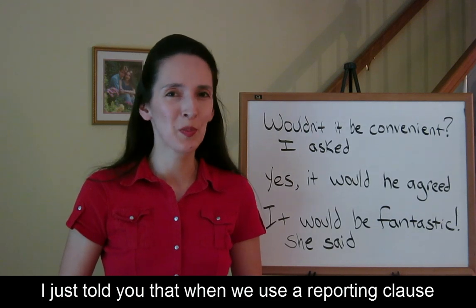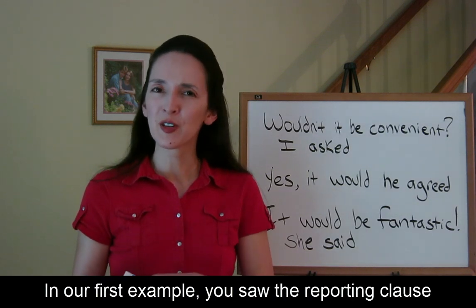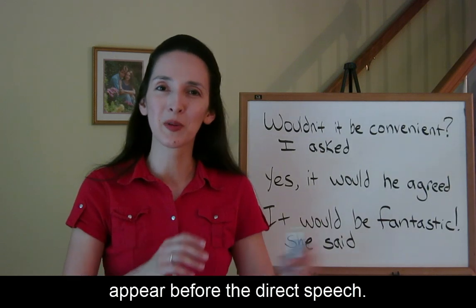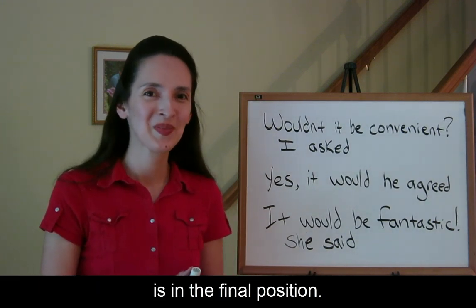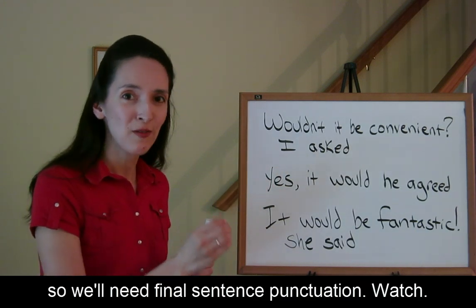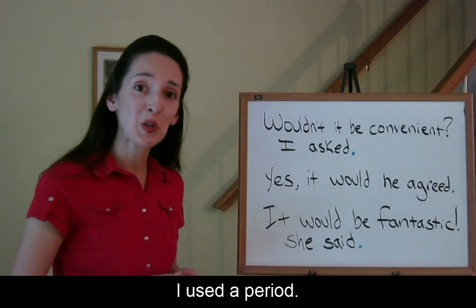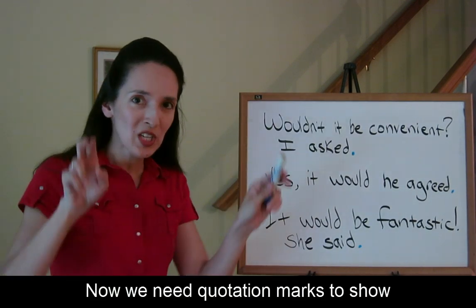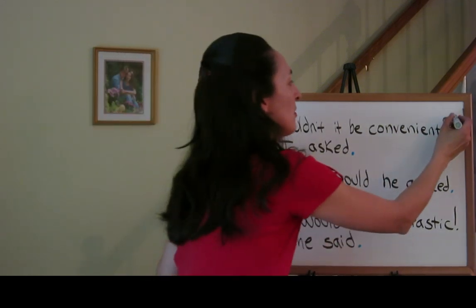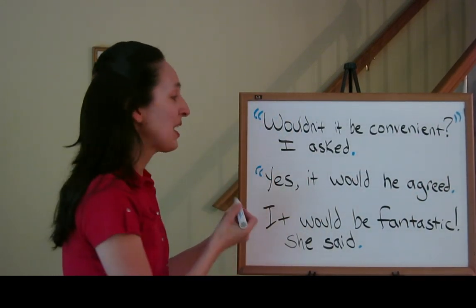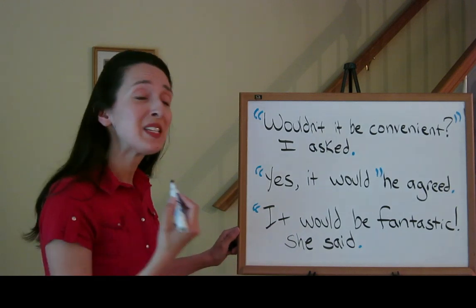When we use a reporting clause with direct speech, the reporting clause can appear in different positions. In our first example, you saw the reporting clause appear before the direct speech. Now we'll see examples where the reporting clause is in the final position. It is the end of our statement, so we'll need final sentence punctuation. Watch. 'Wouldn't it be convenient?' I asked. 'Yes, it would.' He agreed. 'It would be fantastic,' she said.